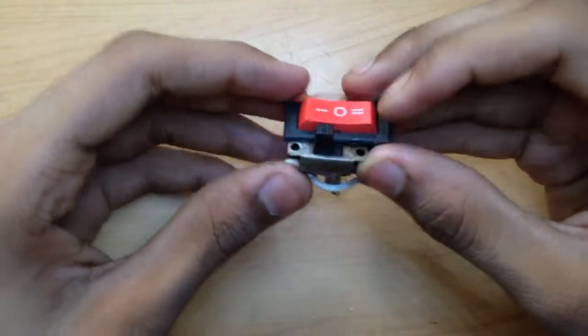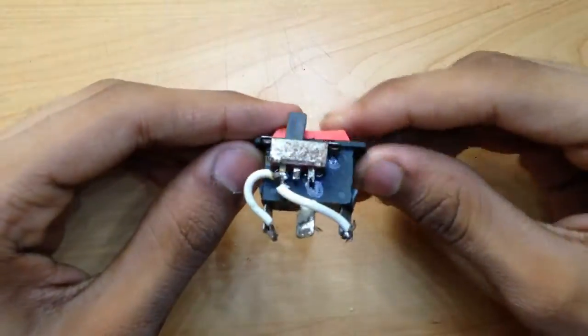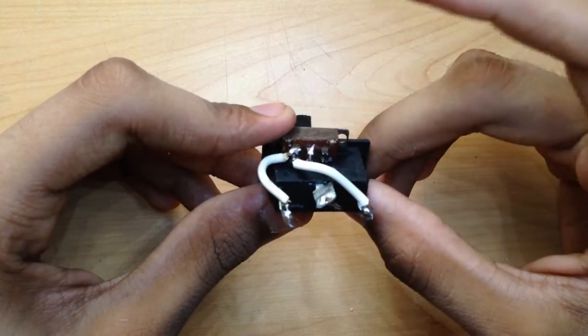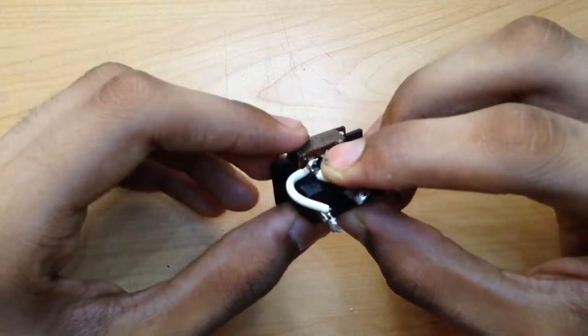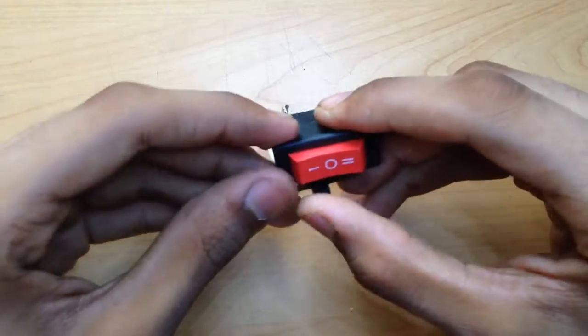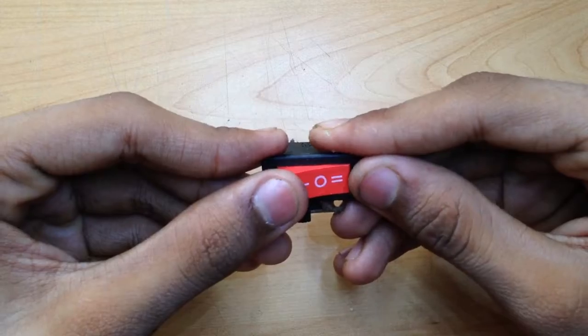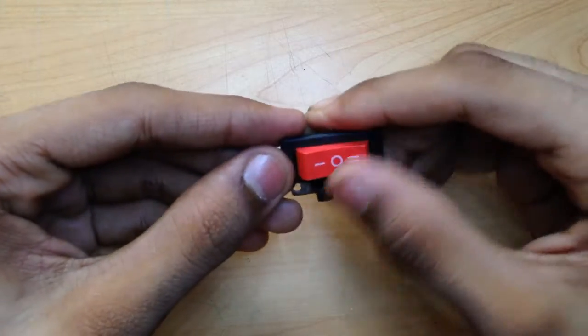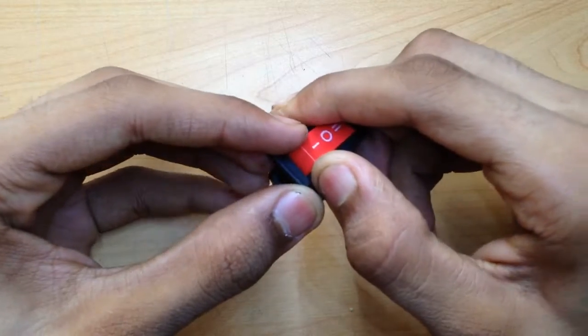This is a switch. Actually, I joined two switches together. This is a DPDT switch. And this is for the hazard lights, because when I go this, it goes for right turn. When I go this, it goes for left turn. And when I turn this on, it will go for hazard light.